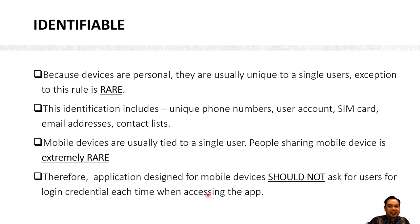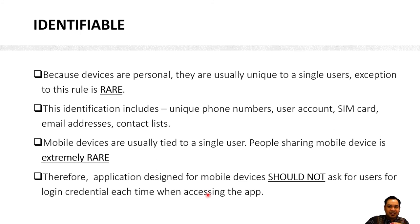Mobile devices are personal, which is why we call them identifiable — they are closely identifiable to the mobile user. This identification extends to a unique phone number, unique user account, unique email associated with the device, unique SIM card, unique contact address list, and unique application API. Therefore, if you are implementing a mobile application, it should not ask for a password or login credentials each time the user accesses the application.